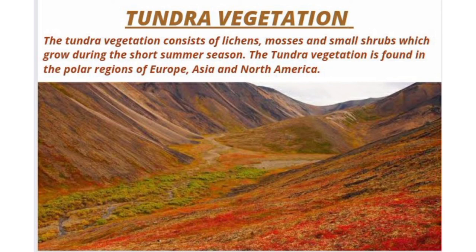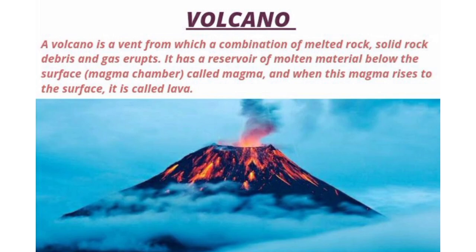Volcano. A volcano is a vent from which a combination of melted rock, solid rock, debris and gas erupts. It has a reservoir of molten material below the surface, called the magma chamber, which is called magma. When this magma reaches the surface, it is called lava.